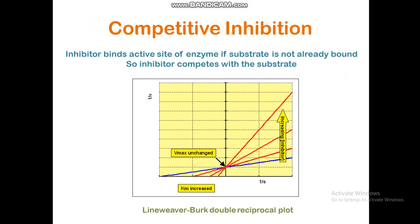In case of competitive inhibition, the inhibitor binds the active site of the enzyme if the substrate is not already bound. So the inhibitor competes with the substrate. In the Lineweaver-Burke double reciprocal plot, we get the inverse of substrate concentration on the x-axis and the inverse of maximum velocity on the y-axis. The convergence of these lines gives the Vmax on the y-axis and Km values on the x-axis.